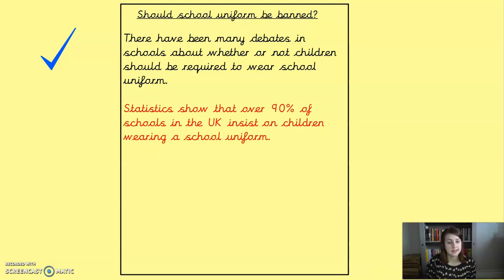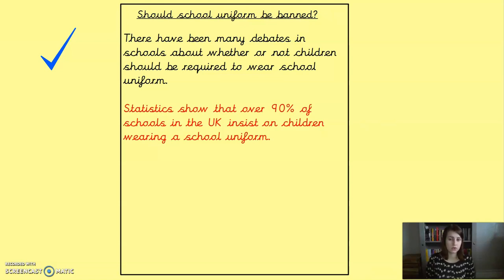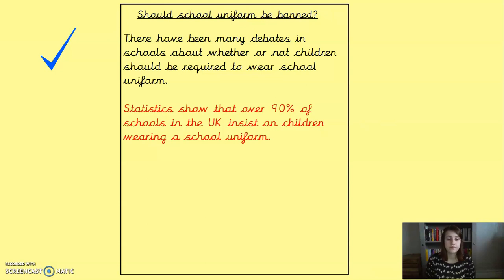As an example starting sentence, I've started mine with a statistic that I completely made up: 'Statistics show that over 90% of schools in the UK insist on children wearing a school uniform.' You could start your 'for' paragraph with a statistic, or have a look at the 'Should homework be banned?' discussion text to see how they've started it. You can start however you like. Pause the video, use all the resources on the website to help you, and come back when you've written your full paragraph.